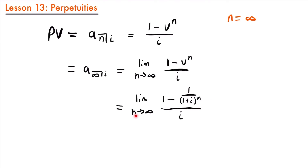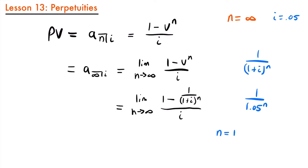We're looking at this function as n approaches infinity, so let's look at this term more closely. If we have 1 divided by (1 plus i) to the power of n, what happens as n gets larger? Let's say i is equal to 0.05, so we'd have 1 divided by 1.05 to the power of n. If n equals 1, this expression equals 0.95238. If n equals 10, it equals 0.61391.